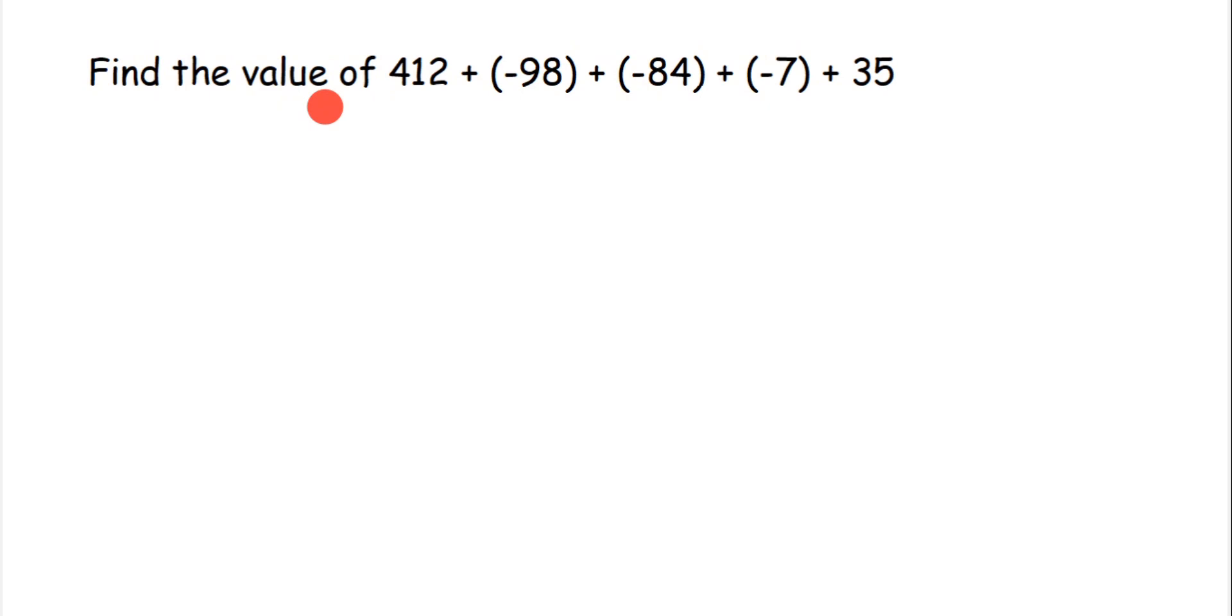Find the value of 412 plus minus 98 plus minus 84 plus minus 7 plus 35. Here we are adding 5 integers. We have both positive and negative integers.